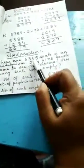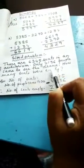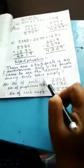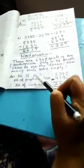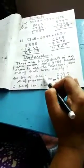Word problem. There are 6,345 seats in an auditorium. Only 4,136 people came to see the drama. How many seats were empty? Children, here we have to do the sum with the statement. And it is compulsory.